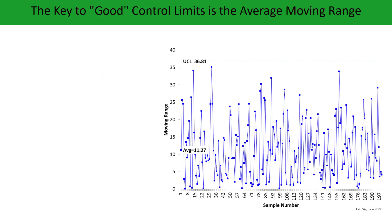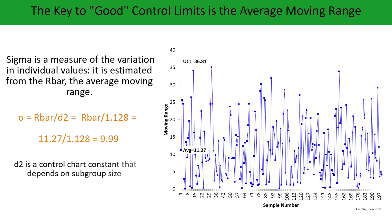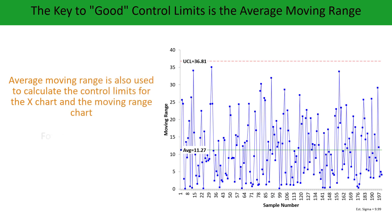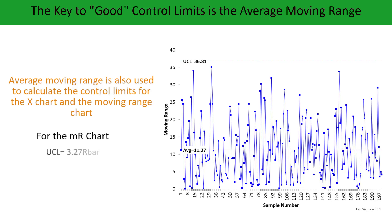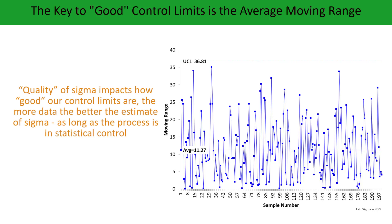The key to good control limits is the average moving range — the variation in individual results. Sigma is a measure of the variation in those individual values, and you estimate it from r-bar. The average moving range divided by d2 is our value of sigma; in this example, that's 9.99. The average moving range is also used to calculate the control limits for the X and moving range charts. For the X chart, it's x-bar plus or minus 2.66 times the average moving range; for the moving range chart, the upper control limit is 3.27 times r-bar.